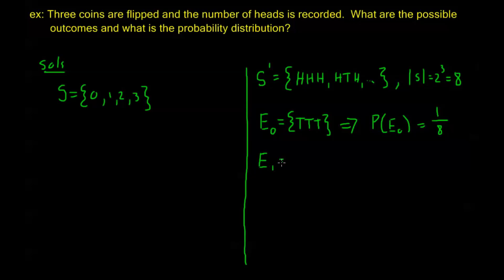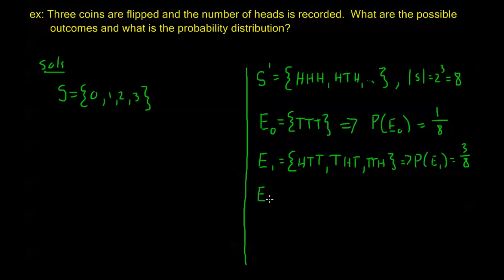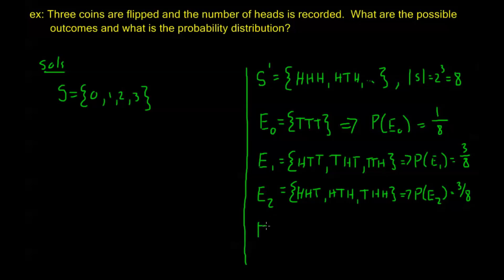For E₁, one head: the outcomes are HTT, THT, TTH — order three — so P(E₁) = 3/8. For E₂, two heads (equivalently one tail): outcomes are HHT, HTH, THH — also order three — so P(E₂) = 3/8, as expected by symmetry with E₁. For E₃, three heads, the only outcome is HHH — order one — so P(E₃) = 1/8.